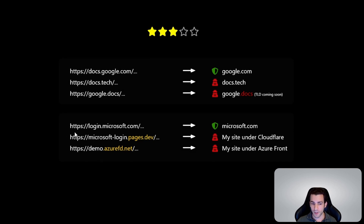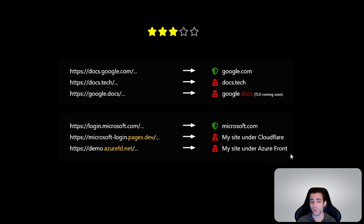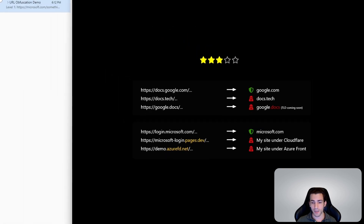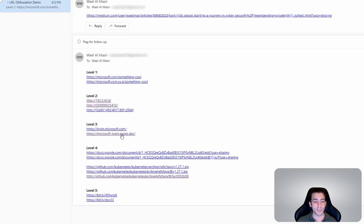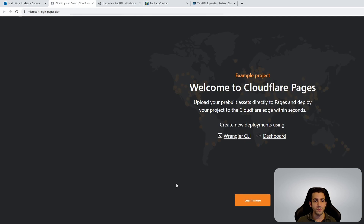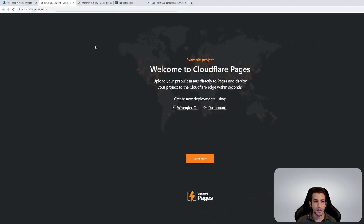We said earlier we don't really care about subdomains, but in this case we actually do. Cloudflare, Azure Front Door, and other services allow you to host your website under their domain and TLD. For example, Cloudflare gives you pages.dev and Azure Front Door gives you .azurefd.net. So if we click on MicrosoftLogin.pages.dev, we're actually taken to something completely different than Microsoft.